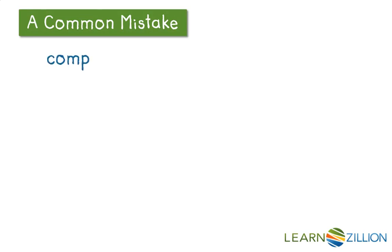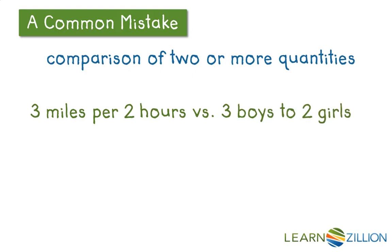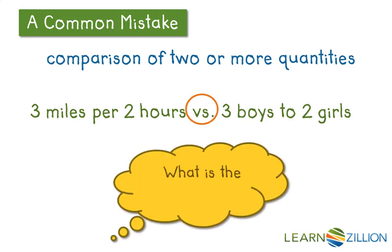A common mistake is when you focus on just comparing two or more quantities as the definition of a ratio. You may see a rate such as three miles per two hours and you may see a ratio such as three boys to two girls. They both look like they're comparing two quantities. So why is one a rate and one a ratio? What is the key difference that I'm missing?